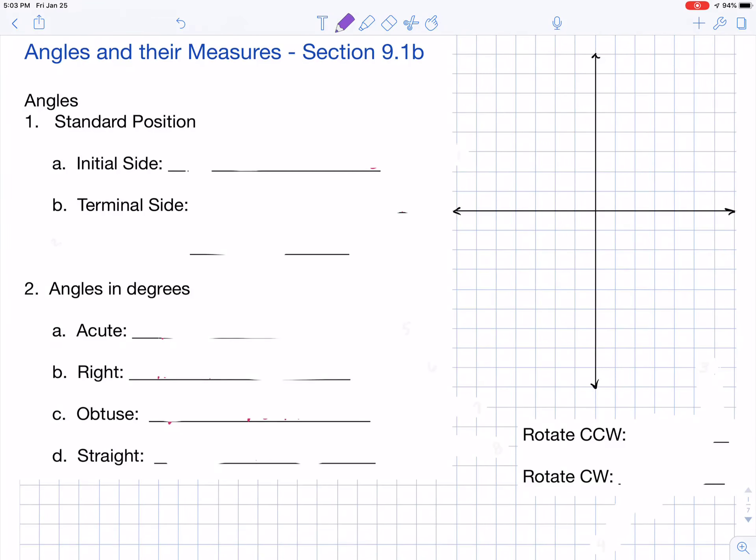Hey folks, this is an introduction to angles and their measures from chapter 9.1. We'll go through a little bit of terminology right off the bat here. When we have an angle that is in standard position, every angle will have two parts: one is the initial side and one is the terminal side.